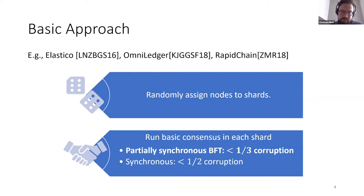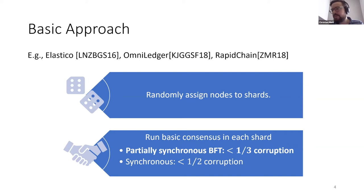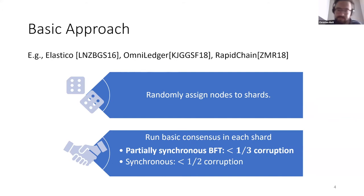How much corruption is too much depends on the model. There are essentially two worlds to consider. In a synchronous setting like Bitcoin, you can tolerate up to 49% corruption, but synchronous means you need to know an upper bound on the network delay — if the delay is actually slower than expected, the protocol breaks. Partially synchronous or even asynchronous protocols don't need to know such an upper bound, but they can only tolerate less than a third corruption. I'll focus on the partially synchronous setting because that's probably what you want for sharding, and it's the more challenging setting.